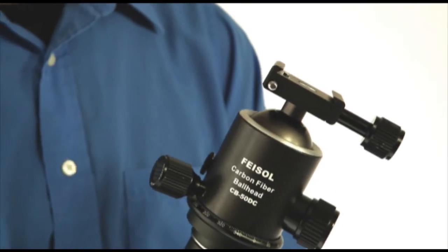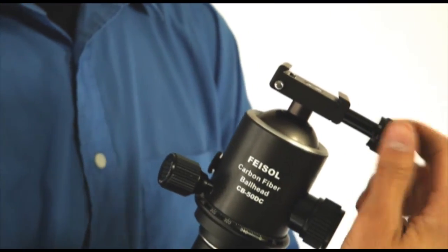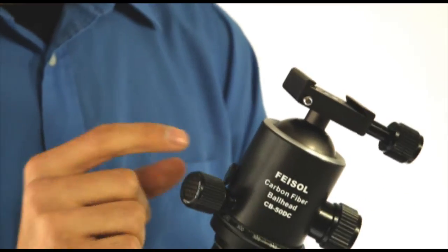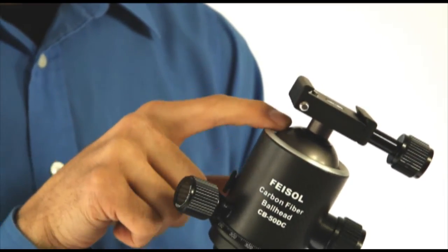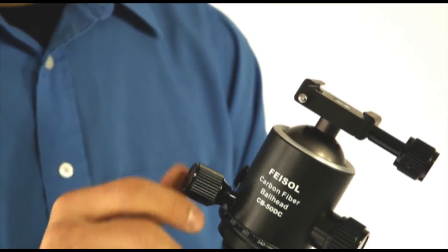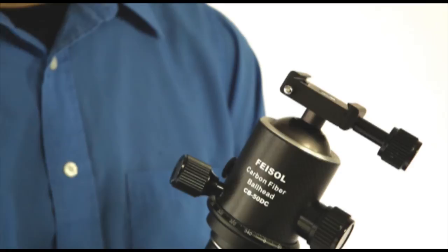There are four adjustment knobs on this model. There's a knob on the release plate. There's a knob for the center ball. A friction knob for the center ball which controls the speed of its motion. And a panning knob which allows 360 degrees of rotation.